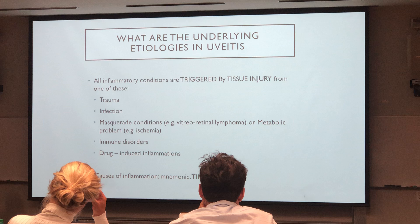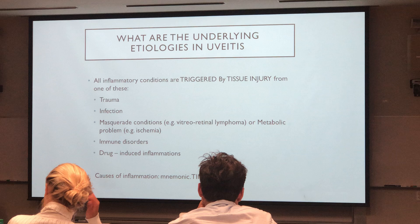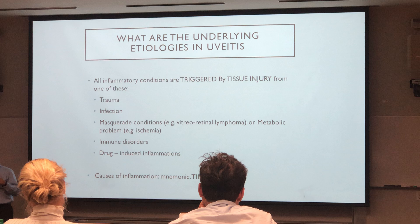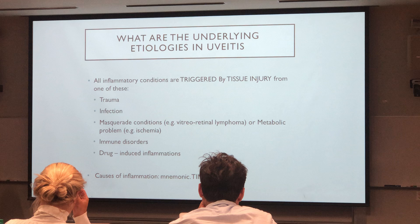Those causes include trauma, infection, masquerade syndrome — meaning conditions that may mimic uveitis, such as vitreoretinal lymphoma or even a chronic retinal detachment — ischemic process, immune disorders, and drug-induced inflammatory diseases. I have a little mnemonic just to remind me to go through these factors for a brand new patient's uveitis, because sometimes I may forget to ask about drugs that may induce uveitis, or I may not think of some of the masquerade syndromes.